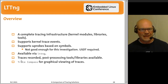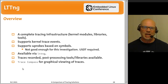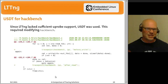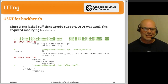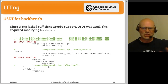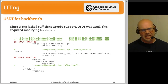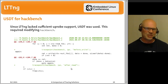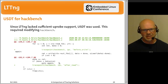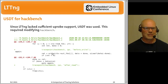LTTng includes a graphical viewer called TraceCompass. I had to modify Hackbench by adding two USDT trace points — just inserting a before_write and after_read trace point so LTTng could react to those events. Without LTTng, using uProbe offsets or line numbers, I could just specify the relevant line without modifying the code.